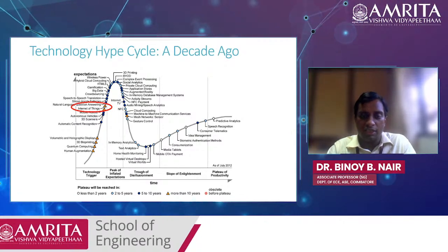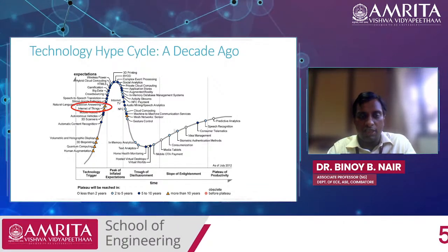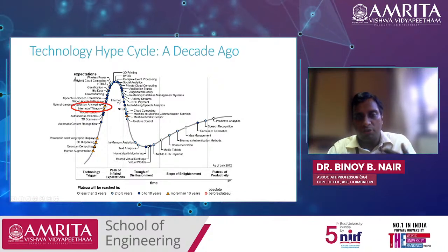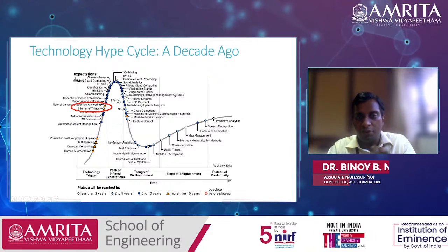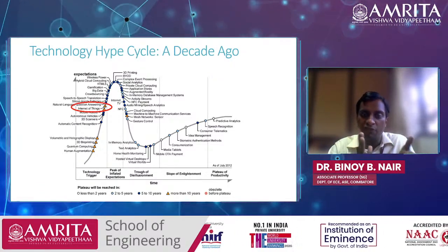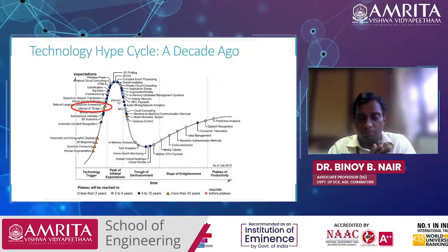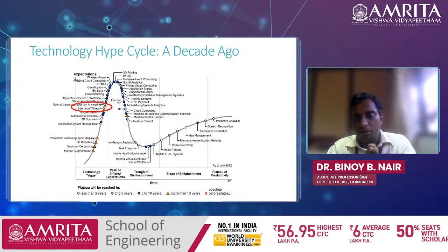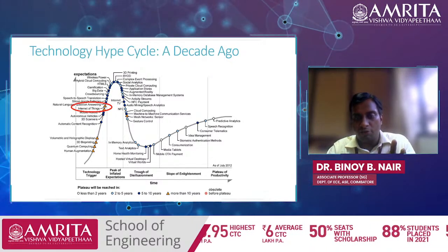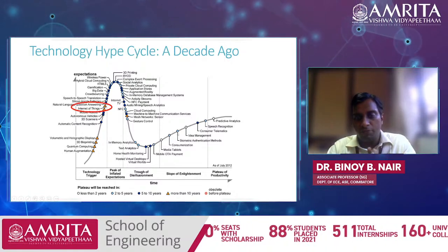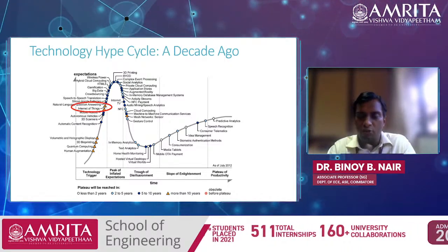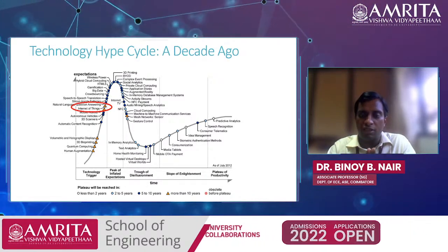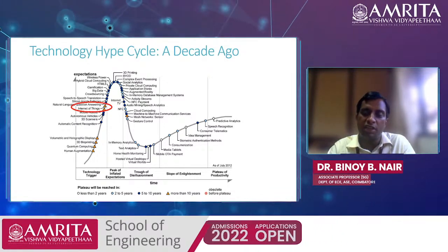This is the Gartner hype cycle, released every year. By 2011 you can see Internet of Things was added, highlighted in red. Over the past decade IoT has gradually moved up, come down, and now reached a stage where part of the IoT ecosystem has reached the slope of enlightenment — we know exactly what IoT is capable of and have started deploying IoT devices in large numbers. The technology has stabilized: we've crossed the trough of disillusionment and now understand and make maximum use of IoT-connected devices.